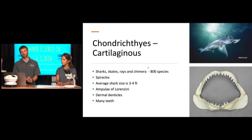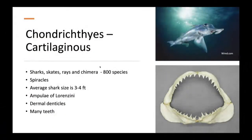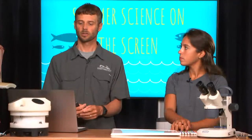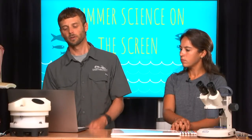The next class is called Chondrichthyes, or cartilaginous fish. These have skeletons made of cartilage — the same material as the tip of our nose and our earlobes. These are our sharks, skates, rays, and chimera. There are about 800 different species in the cartilaginous group. The chimera is a deep water fish that kind of looks like a bunch of fish put together. On average, the average shark is three to four feet — a lot of the sharks we'd see out there are pretty small. They have specialized senses that we're going to get into.